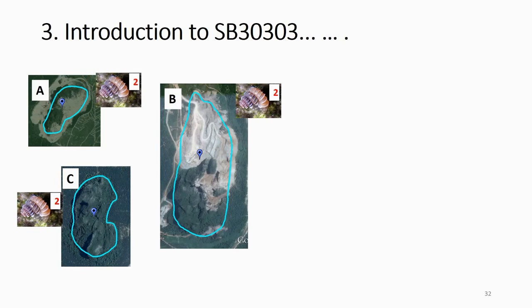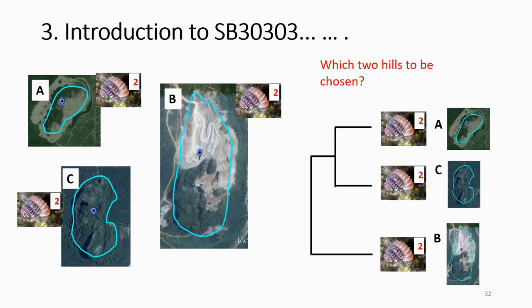Here is a second scenario with the same hills, but now all hills have the same species. Which two hills would you choose to conserve? It's still very hard to make a decision. Of course you want to maximize species diversity — in the previous case, saving one hill saved two species. In this new case, each hill has one species — the same species — and you need to choose two hills. The number of species is the same, so species diversity alone doesn't help differentiate.